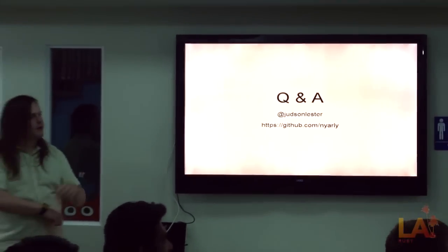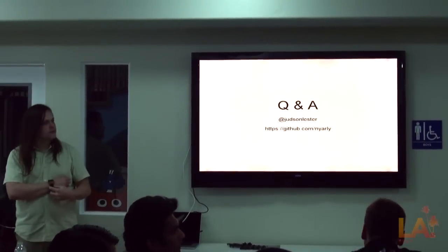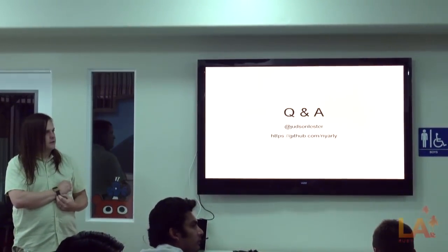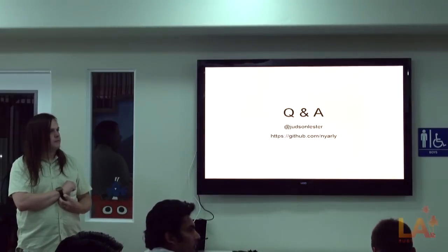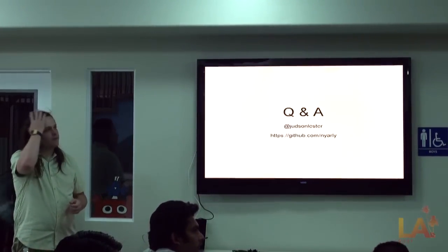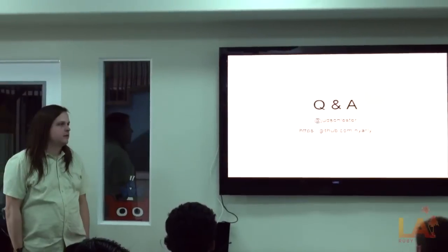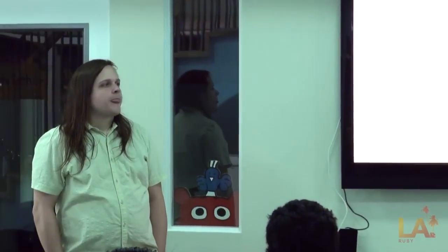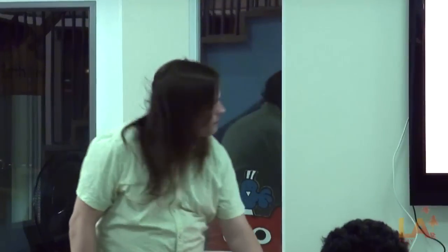I have one. So, I noticed that the arguments that are yielded in each are different for arrays and hashes, right? For the array, it's just the value. For the hashes, it's the key and the value. But they're both just mixing in enumerable. So, how does enumerable, though, treat one differently than the other? So, what happens is...